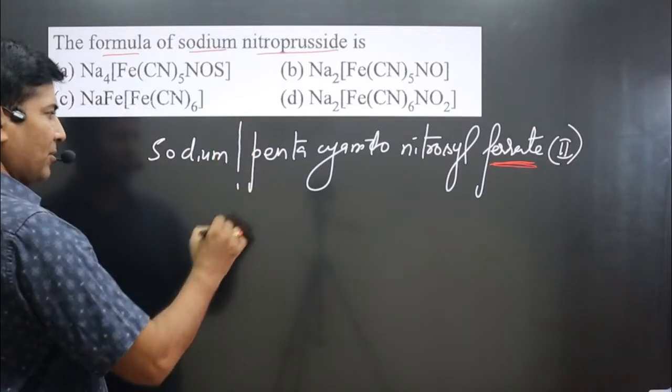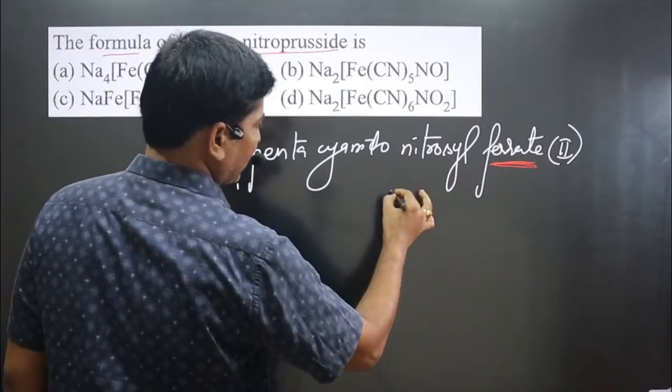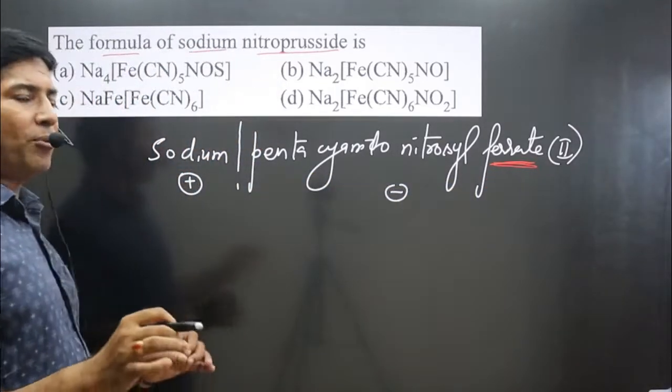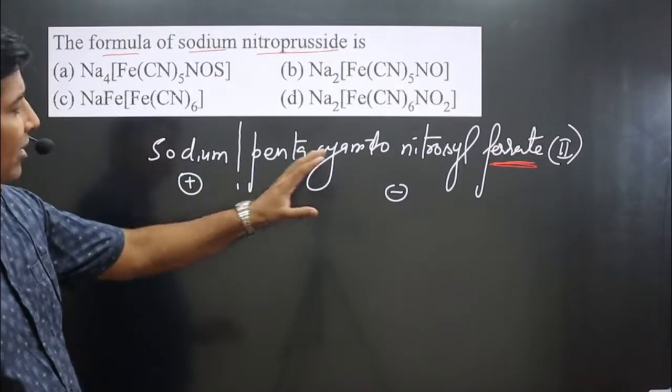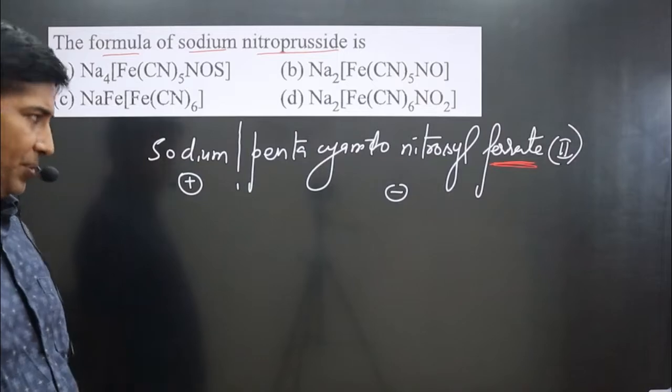You can see you can break this substance from here. So this is the positive part and this entire portion is the negative part. So first of all, we have to name the positive part and then write the chemical formula for the positive part followed by the negative portion.